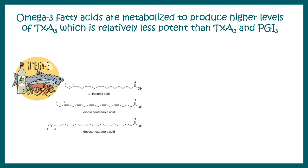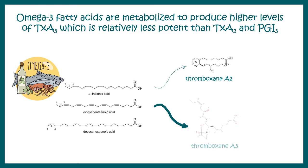If your diet contains sufficient amounts of omega-3 fatty acids, the thromboxane generated would be different. If you have omega-3 fatty acids, thromboxane A3 is generated instead of A2. While A2 is a potent vasoconstrictor, A3 is less potent, and that is why the aberrant vasoconstrictive effects are reduced when your diet contains omega-3 fatty acids.